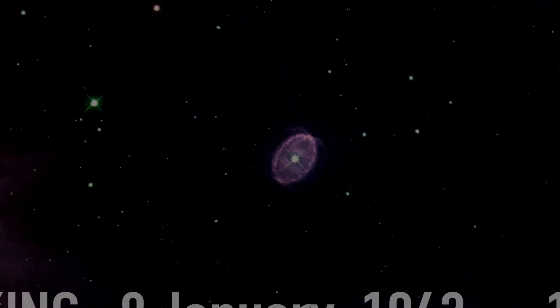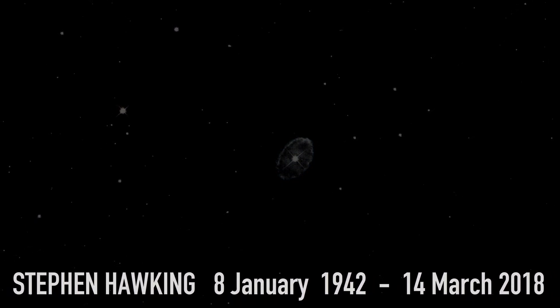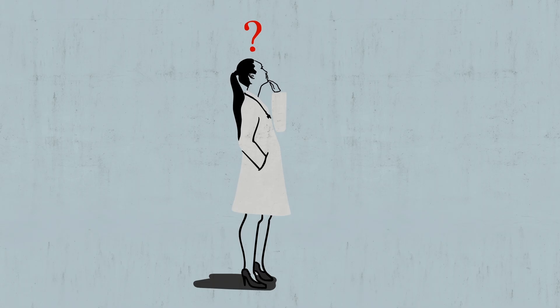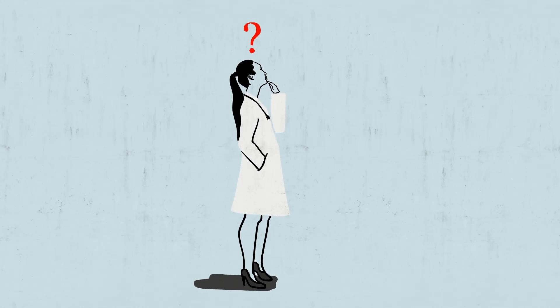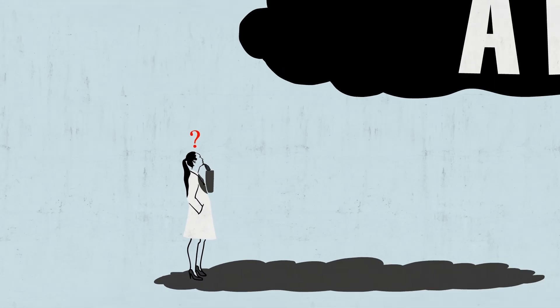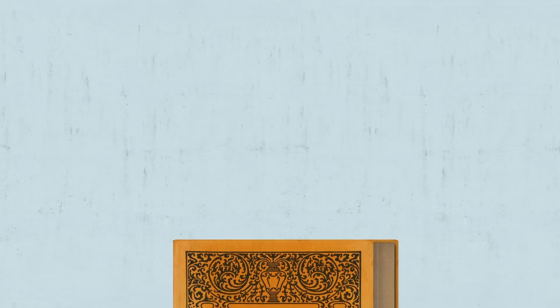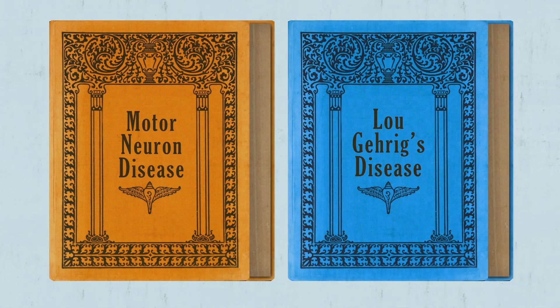However, his condition went uncured, and he passed away in 2018 at the age of 76. Decades after his diagnosis, ALS still ranks as one of the most complex, mysterious, and devastating diseases to affect humankind. Also called motor neuron disease and Lou Gehrig's disease,